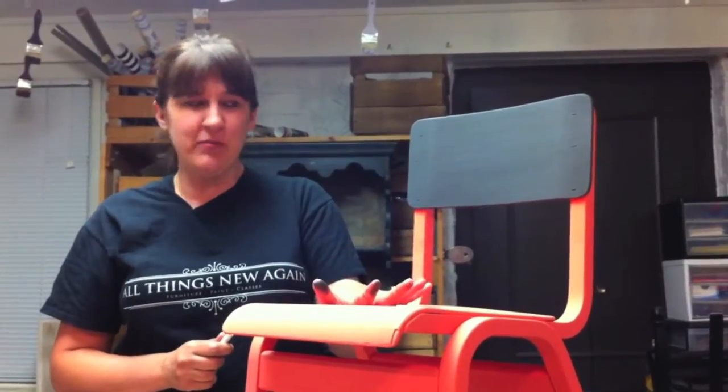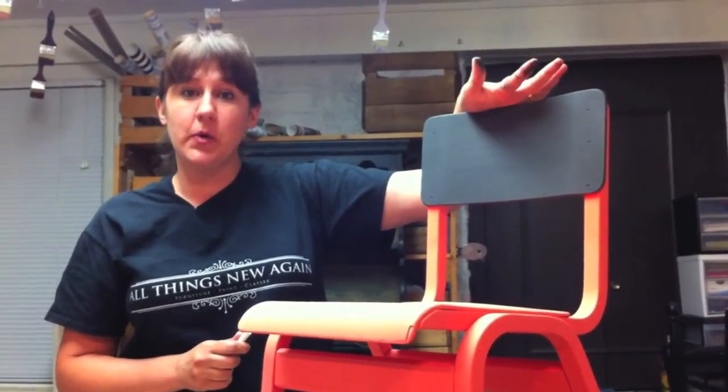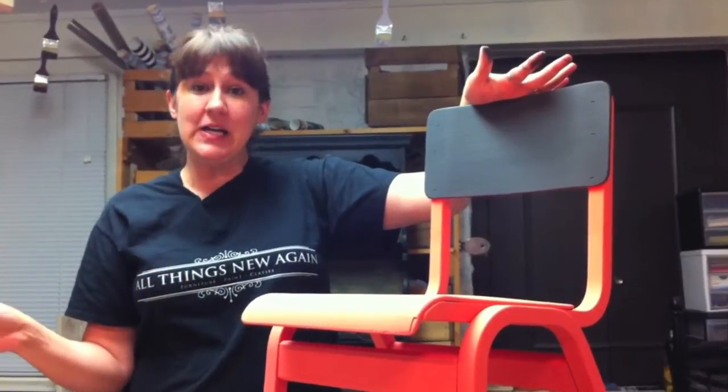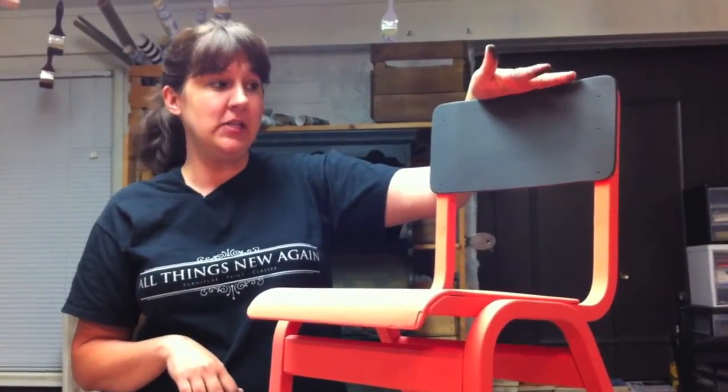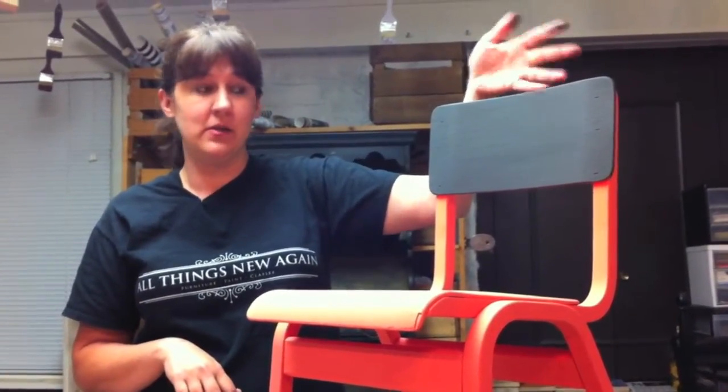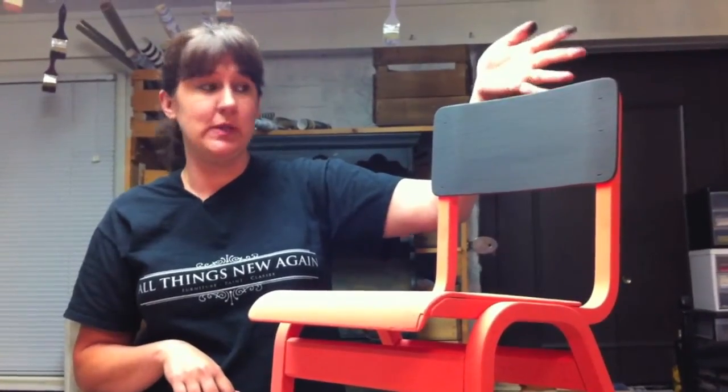But that's the Coral Reef part, and then on the top, this is our chalkboard part. You can use any color of American Paint Company paint, so you can have some really fun chalkboard colors. I just went old school on this project with the Lincoln's Hat Black.